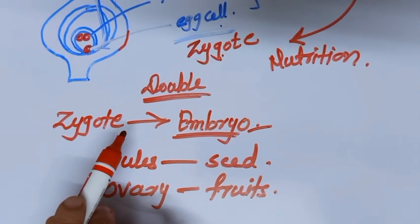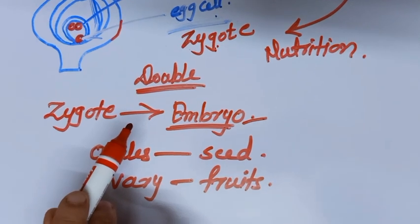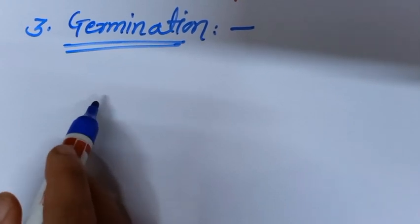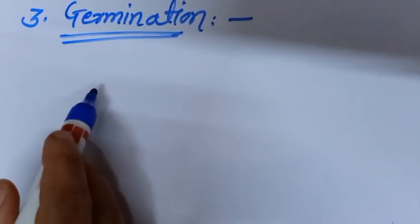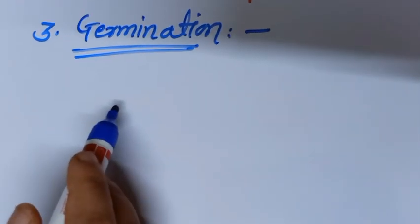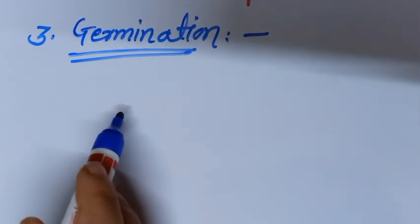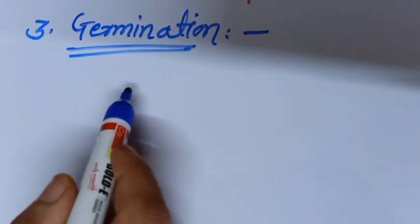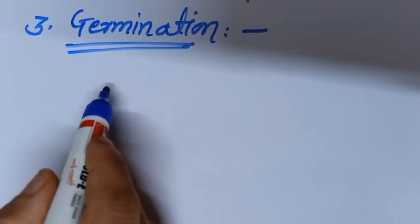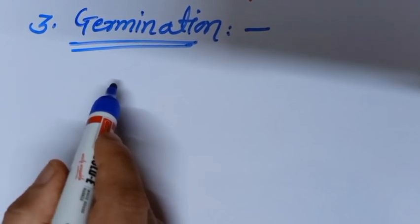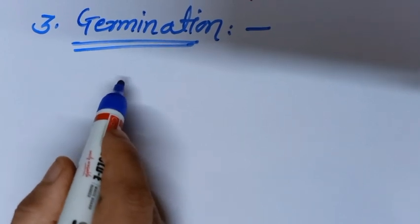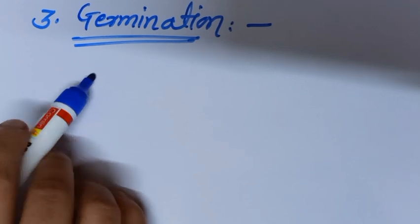The last process in the sexual reproduction of plants is germination. After the formation of seeds from the ovule and fruit from the ovary, when the seed gets suitable conditions, the future plant inside the seed develops into a seedling under appropriate conditions. In this way, small plantlets or seedlings are formed from the seed after fertilization, followed by germination, and new plants are produced.